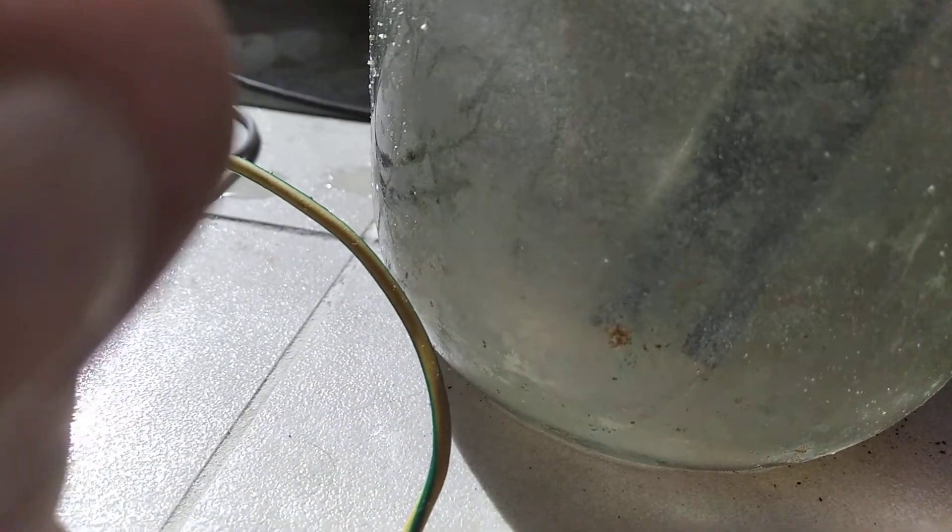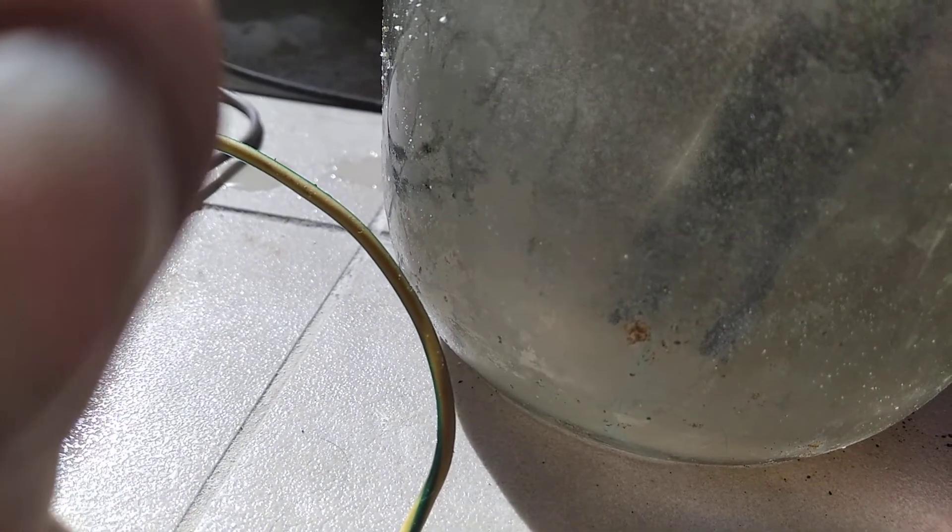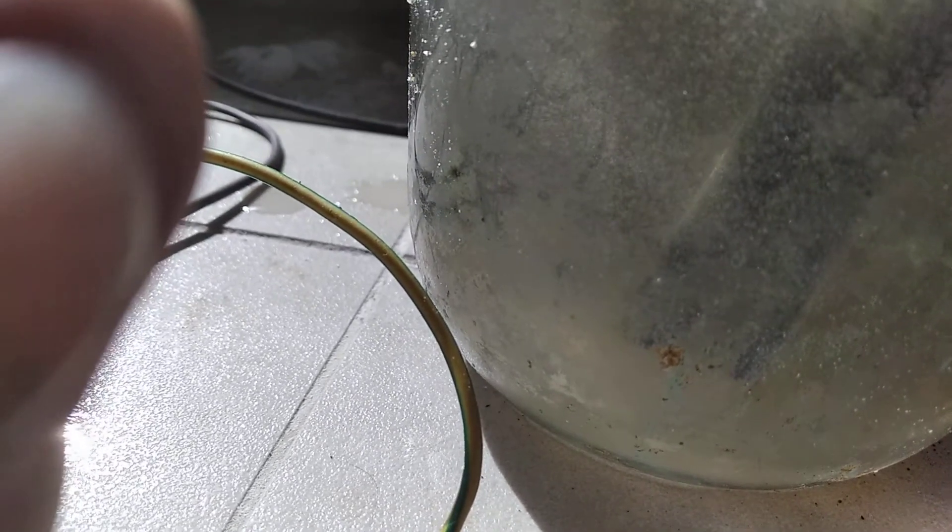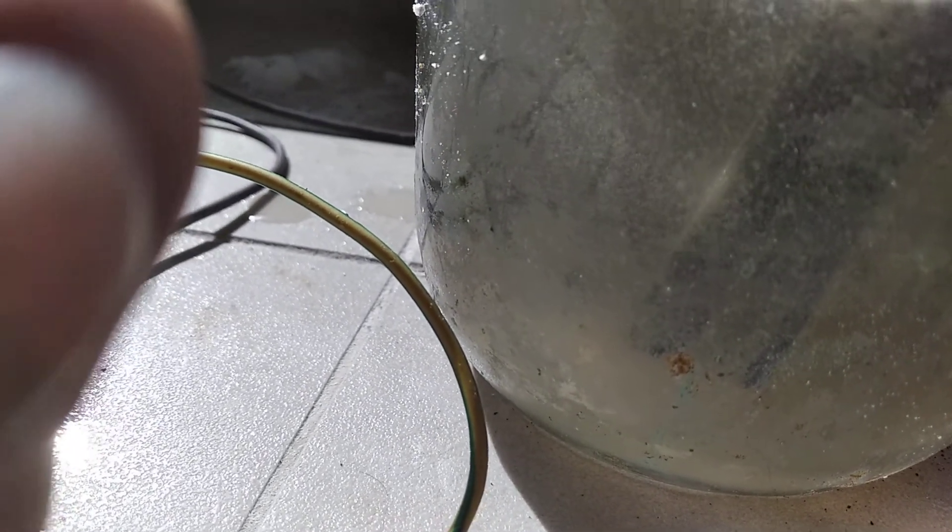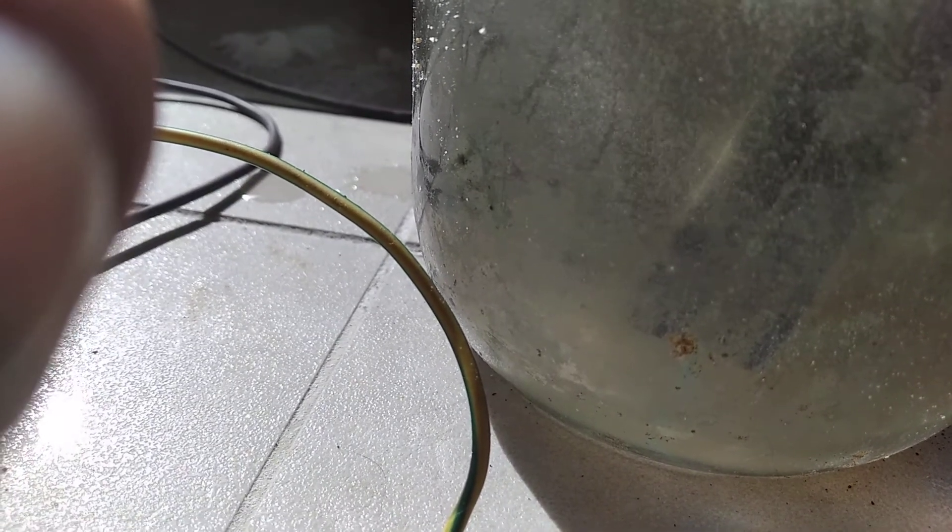So now you don't have to worry about painstakingly adding hydrochloric acid. Instead you can just add a bit of calcium chloride, and when you see the black starting to come out of your anode, that tells you to add more calcium chloride to prevent the degradation of your electrode.